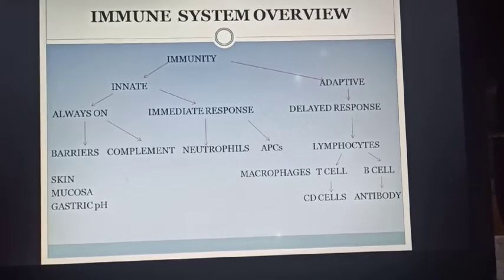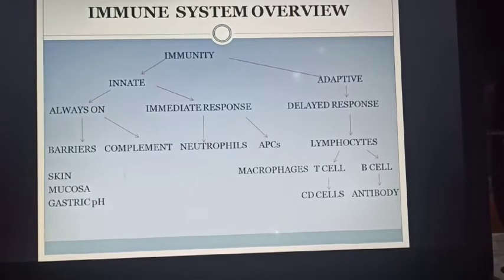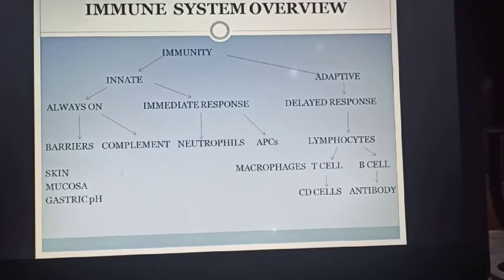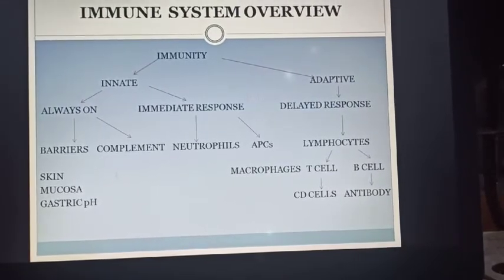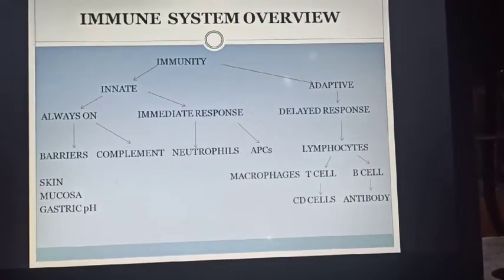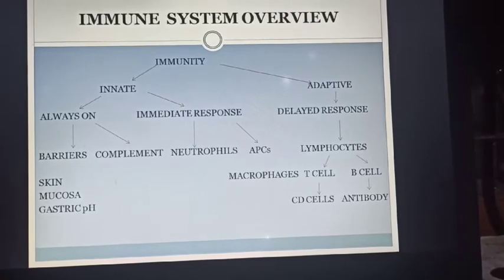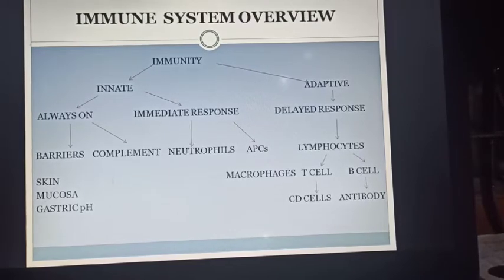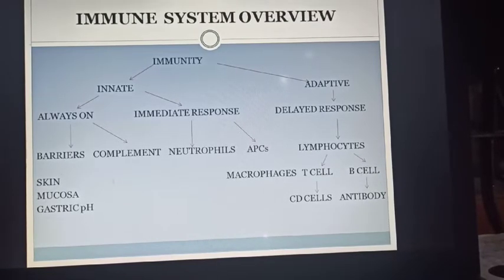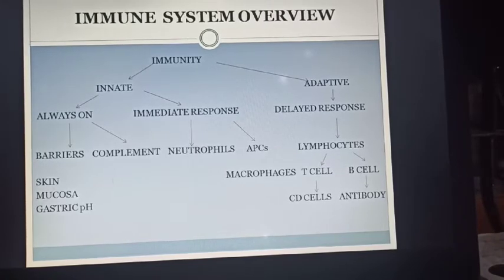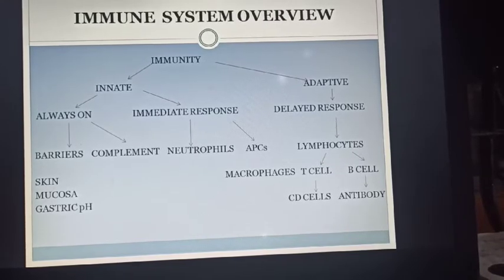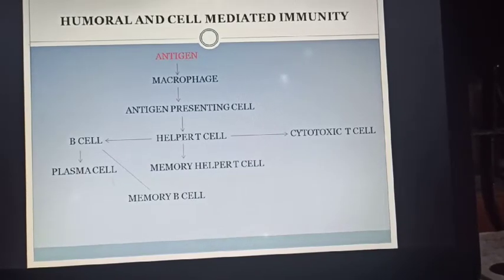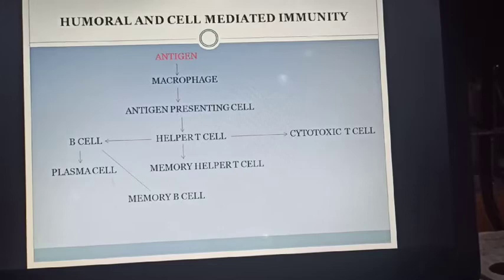Next is adaptive immunity, which is totally different from innate immunity. It is very specific, takes longer time to develop, but is more specific. It is activated when the pathogen enters and displays its properties. It is responsible for the production of antibodies, which are very specific in nature. T-cells activate B-cells, and after activation, B-cells produce antibodies. This is the difference between humoral and cell-mediated immunity.